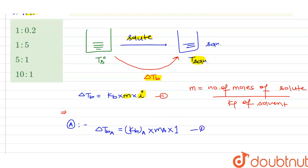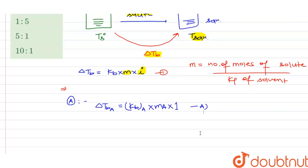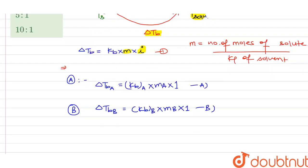Suppose this is equation A. Similarly, we can write for solution B, that is ΔTbB equals KbB multiplied by m multiplied by 1. If we try to divide both equations,